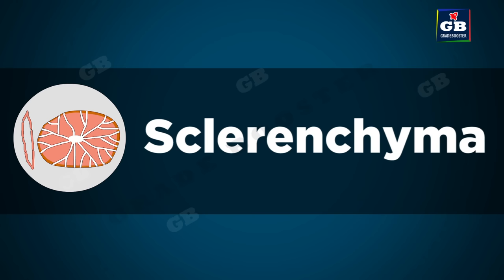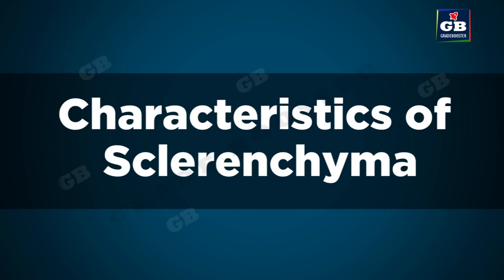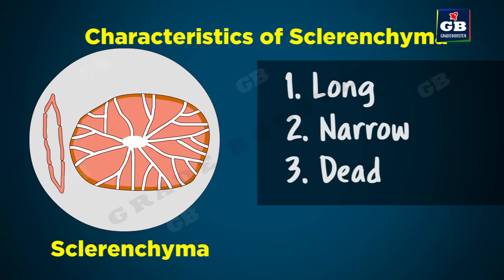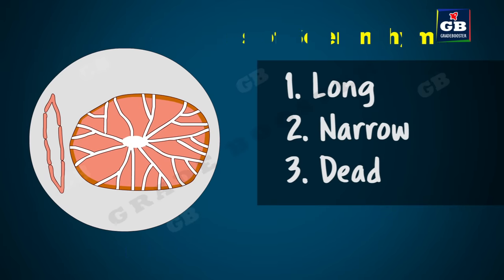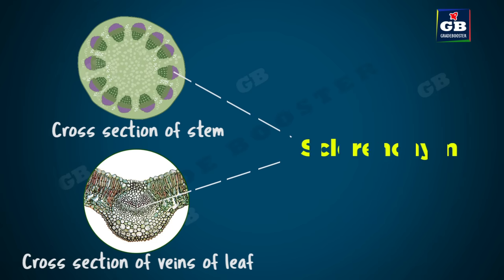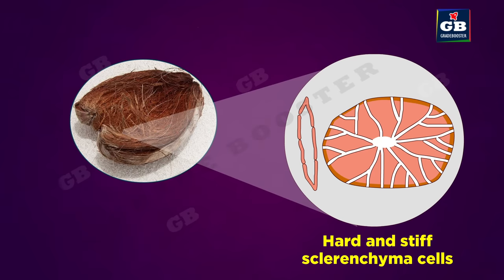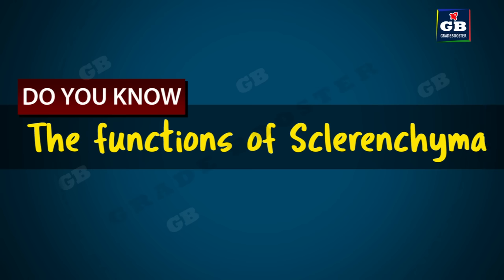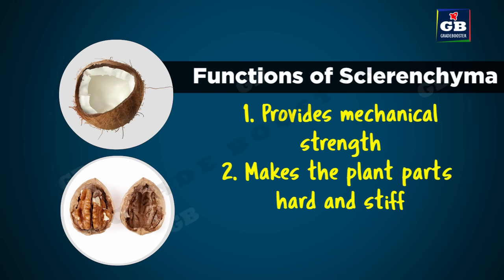Next we see the third type of simple permanent tissue, sclerenchyma. The cells of sclerenchyma are long, narrow and dead. The cell walls are thickened due to the presence of a compound called lignin. Due to thick cell walls, there is very little or no space inside the cells. This tissue is located around the vascular bundles in the stems, in the veins of leaves, and in the covering of seeds and nuts. The coconut husk is made up of sclerenchymatous tissue. It provides mechanical strength and makes the plant and its parts hard and stiff.